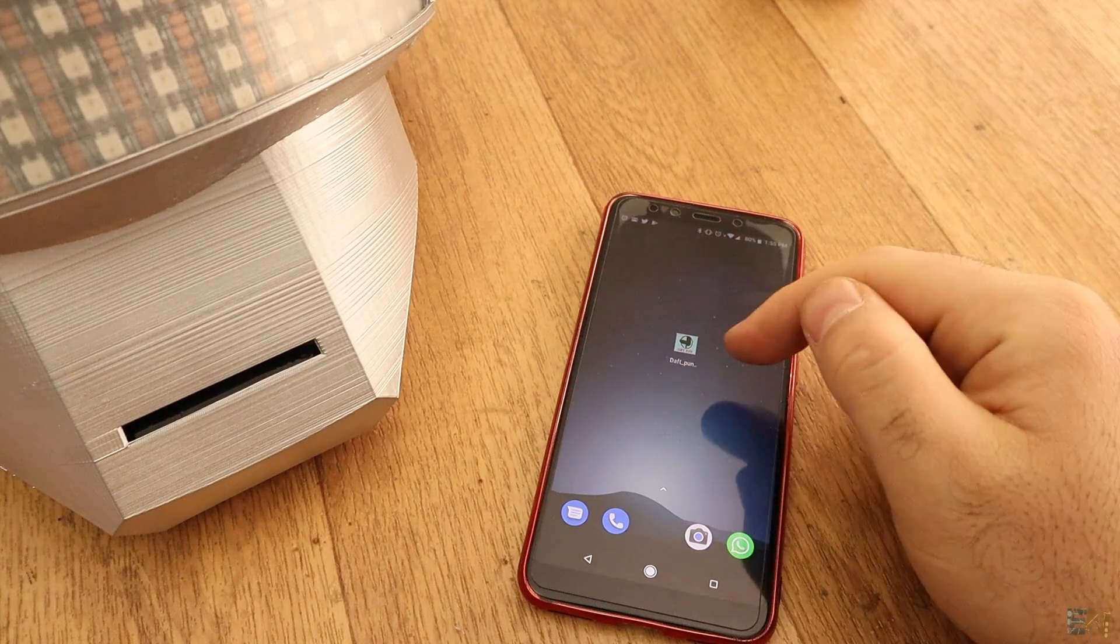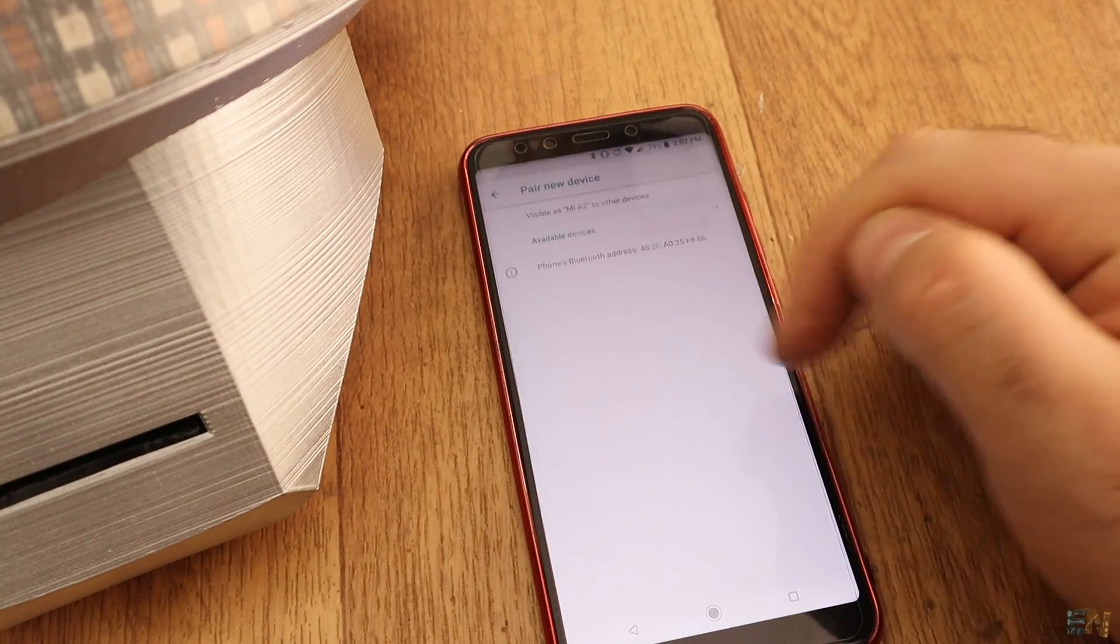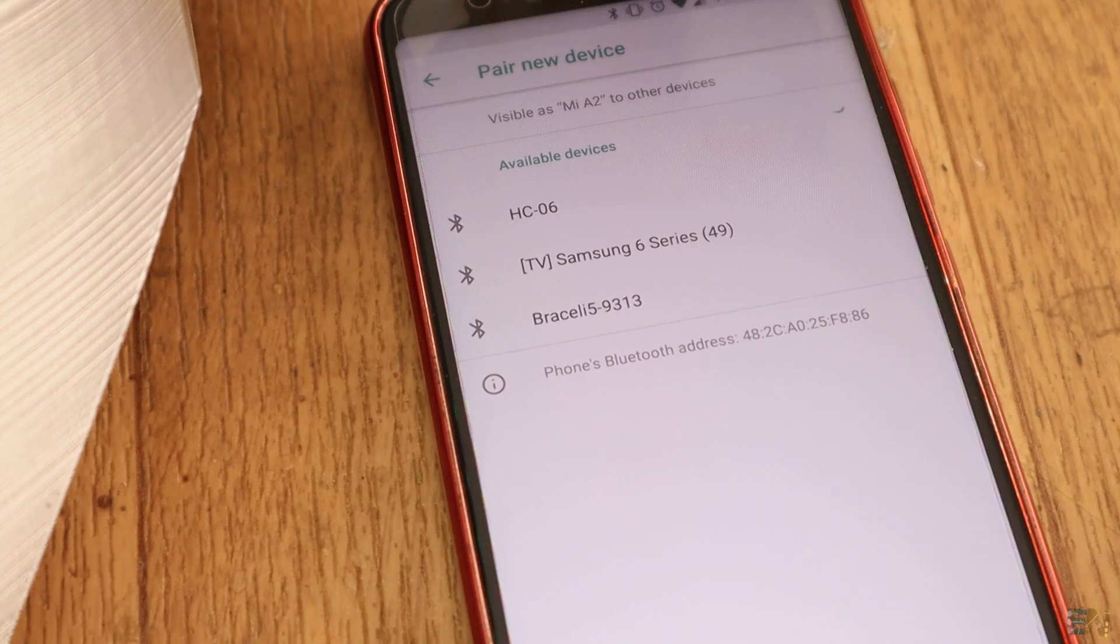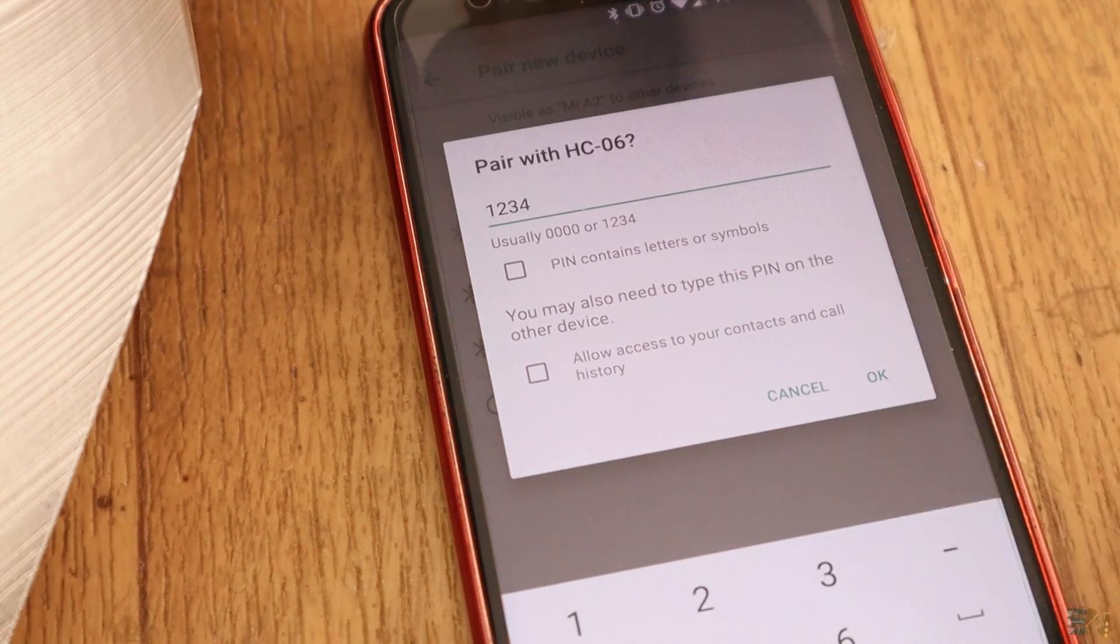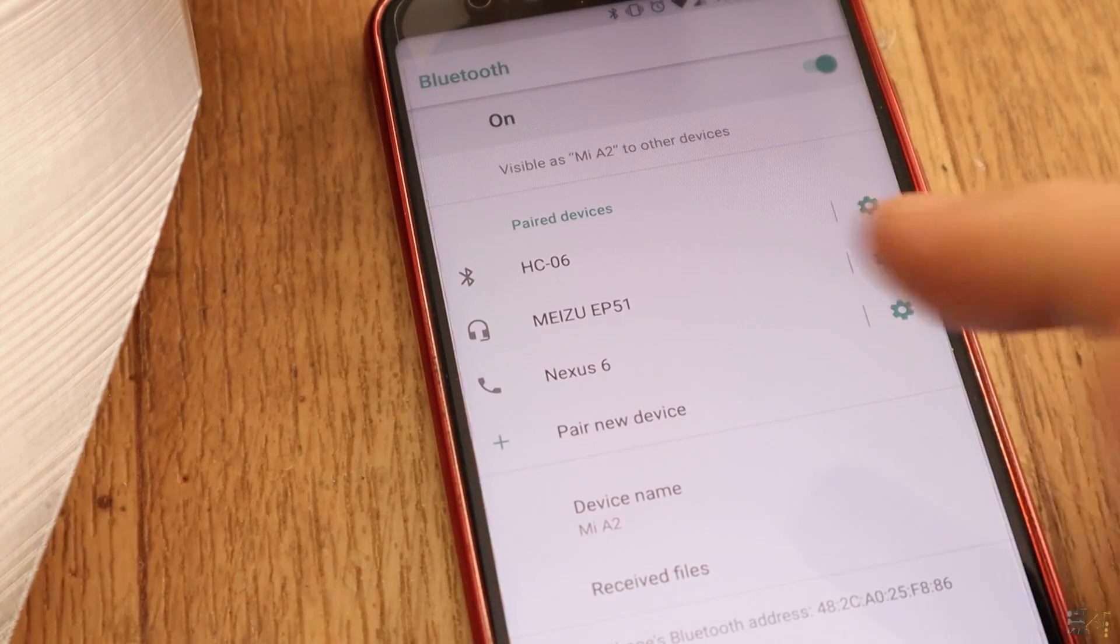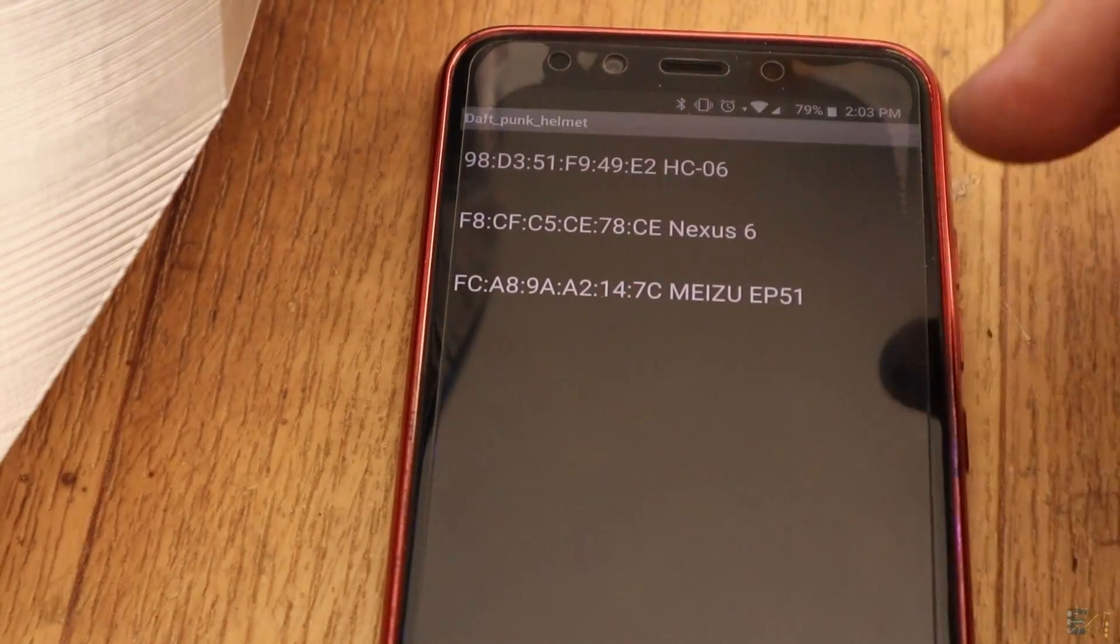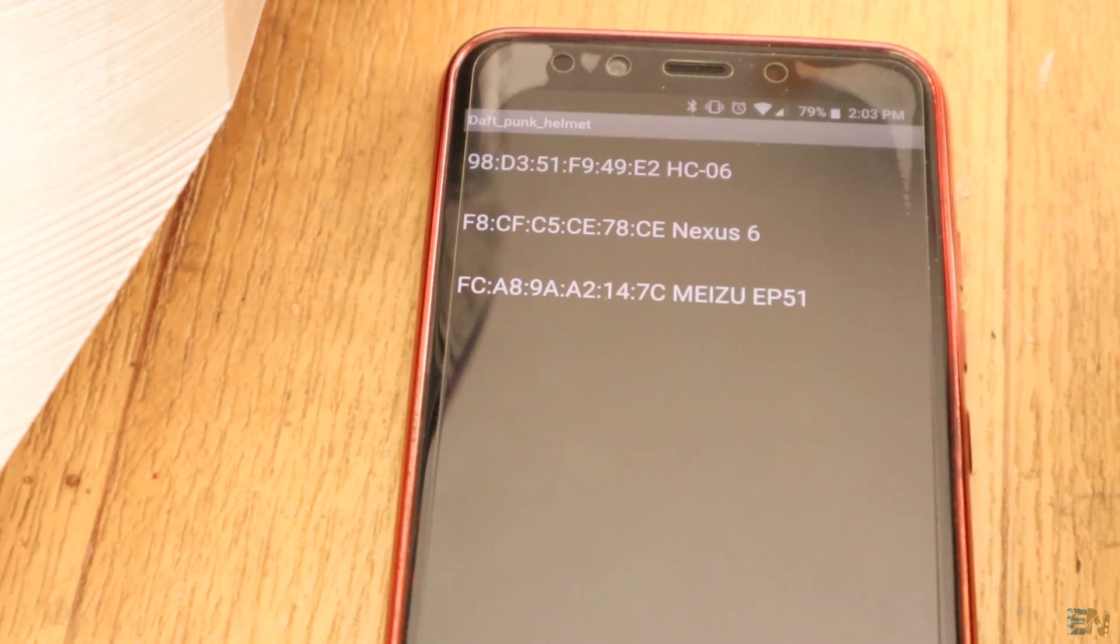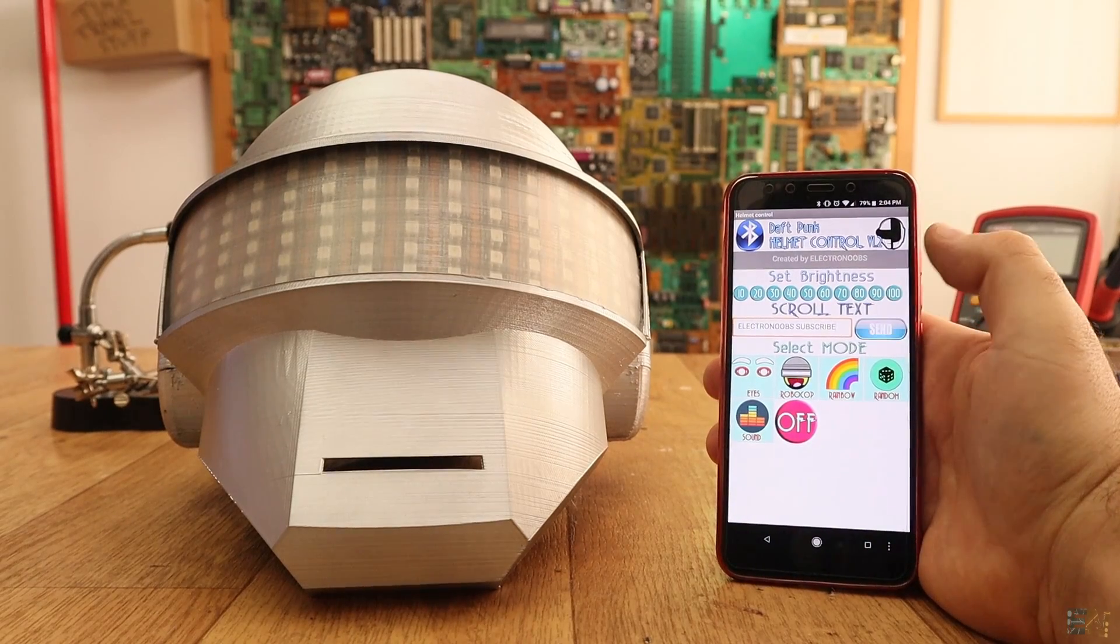So install the app to your smartphone and open the Bluetooth settings. Pair to this module using the 1234 or 0000 password. Now open the app. Now click the Bluetooth button and select the HC06. So now we are connected. I first send the text and it will start scrolling onto the display.